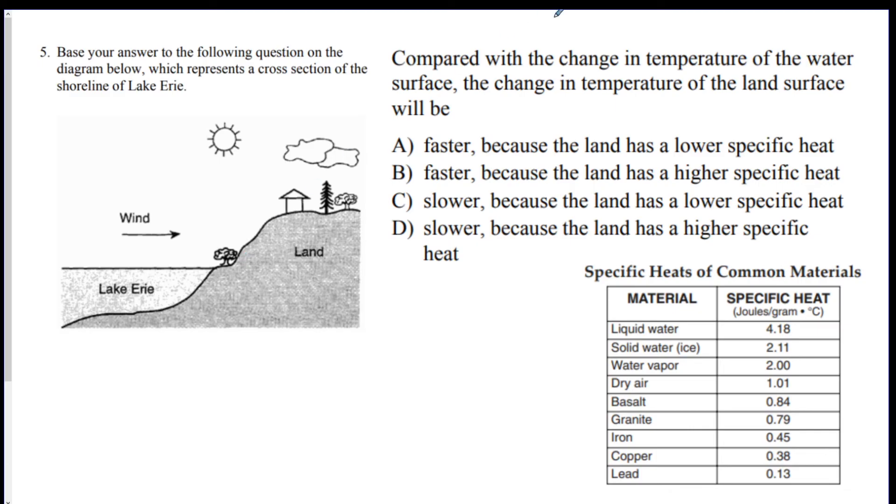Number five. Compared with the change of temperature of the water, the change in temperature of the land will be what? So, they want you to compare the water here to the land here. You need a specific heat chart because, clearly, they're asking you about that in all the choices. So, they want to know, will the land be faster or slower than water? We said in the beginning, basalt and granite make up the land. Water takes the longest. So, land's going to be faster so I can get rid of C and D. And is it because land has a lower specific heat or land has a higher specific heat? According to the chart, the land has the lower specific heat. So, the answer is A.